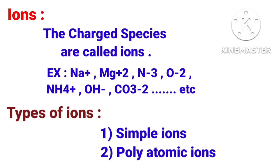Today I want to teach you some fundamentals in chemistry. Today our topic is ions. Ions means the charged species are called ions. Examples are sodium ion, magnesium ion, nitride ion, oxide ion, ammonium ion, hydroxide ion, carbonate ion, and so on. Now let me teach you about the types of ions.